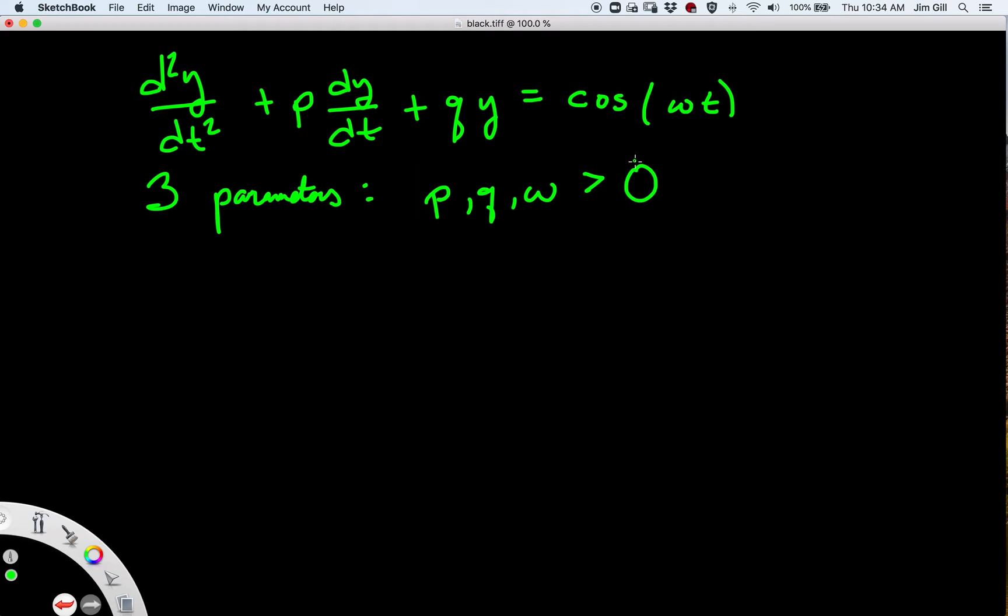p is positive because it's a damping constant; negative p wouldn't make physical sense, nor would a negative q—that would be a spring that pushes in the direction that you're pulling it. q is positive, and omega we take to be positive because cosines are even functions, so it doesn't matter if omega is positive or negative. Only the absolute value of omega matters.